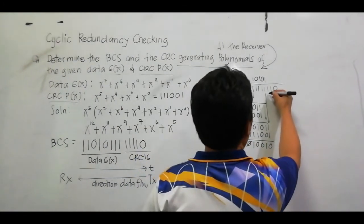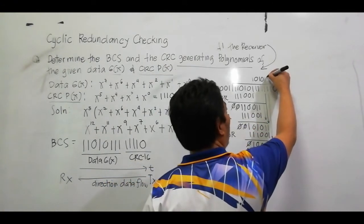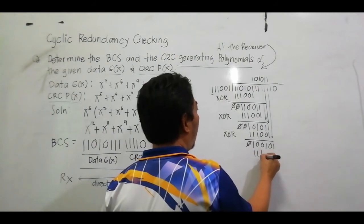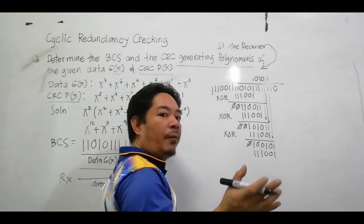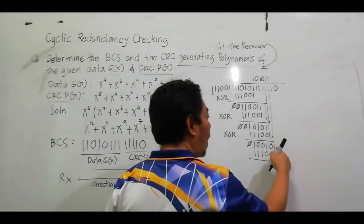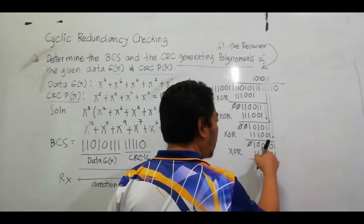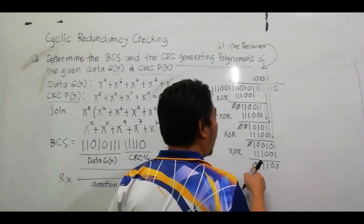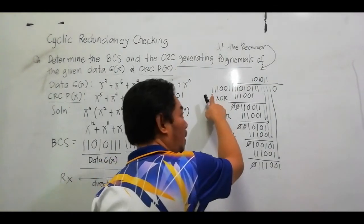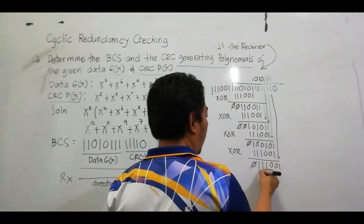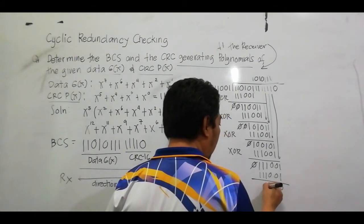Bring down 1. Most significant bit is 1, so quotient is 1. Multiply: 1 1 1 0 0 1. XOR: 1,1=0; 1,0=1; 0,0=0; 1,0=1; 1,1=0. Cancel and bring down 1. Most significant bit is 1, so quotient is 1. Multiply: 1 1 1 0 0 1. XOR: 1,1=0; 0,0=0; 1,0=1; 0,1=1; 1,1=0. Cancel. Bring down 0. Our answer is 0 0 0 0 0 0.